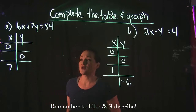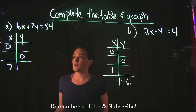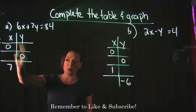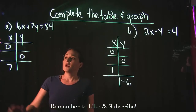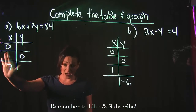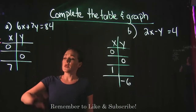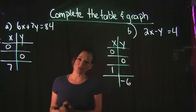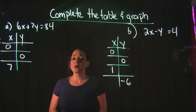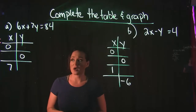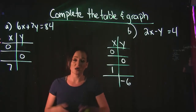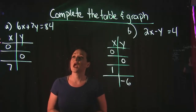With each example we're given a table that has missing values. In example A, we're given that X is 0 but we don't know the Y value. We're also given a Y value but need to find the X, and given another X value where we need to find the corresponding Y. We'll do a bit of algebra, substituting values into our equation to find the missing pieces, then plot those on a graph and connect the dots to create our line.